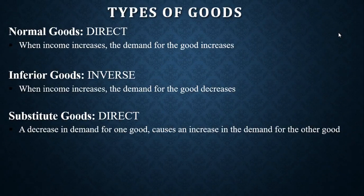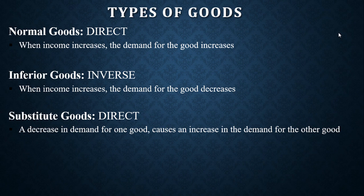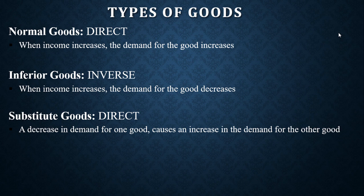I want to talk about types of goods. We have normal goods — when income increases, demand for the good increases. Any good that has this property is a normal good. We also have inferior goods — when income increases, demand for the good decreases. That is an inferior good.